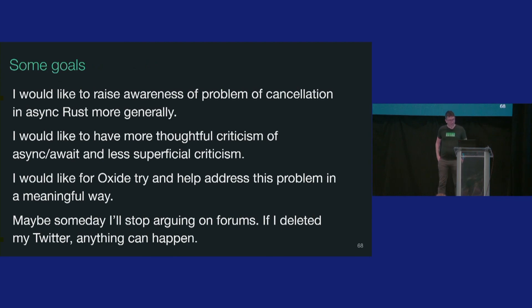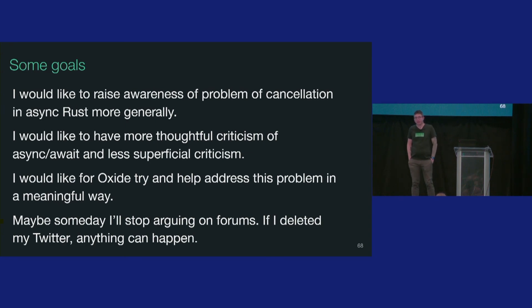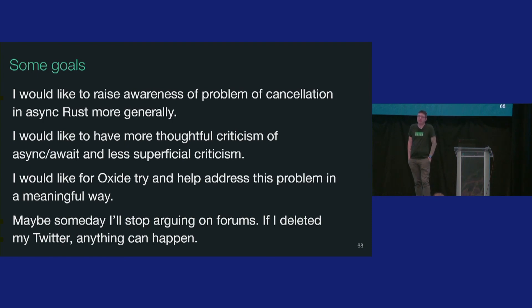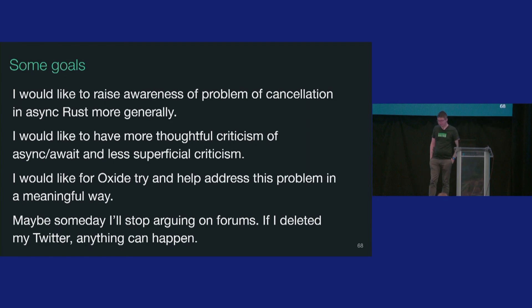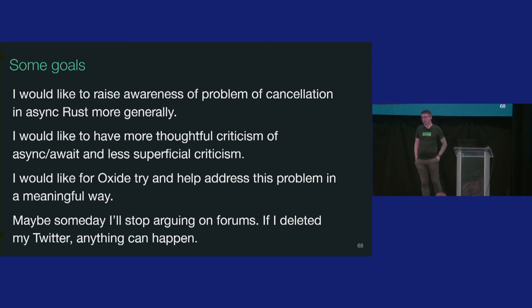To wrap up: I want to raise awareness of the problem of cancellation. If you're writing async Rust today and you haven't thought about cancellation before, please go check out your code — you may have bugs you don't realize, or if there's been a strange bug you can't figure out, this might be the problem. I would love to see more thoughtful criticism and less superficial criticism. I don't expect Hacker News to get better because I gave a conference talk, unfortunately. And I would also like Oxide to try and help address this problem in a meaningful way — that's what we're going to do with this library, and we have internal documents on our struggles with async Rust as well.